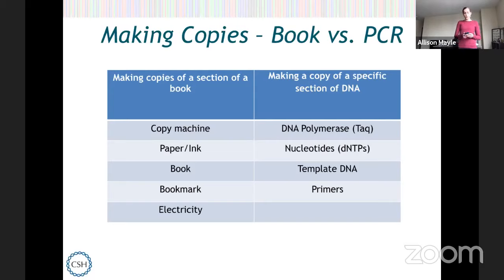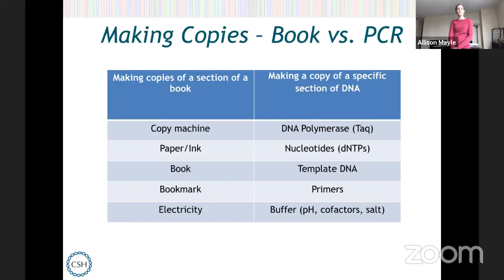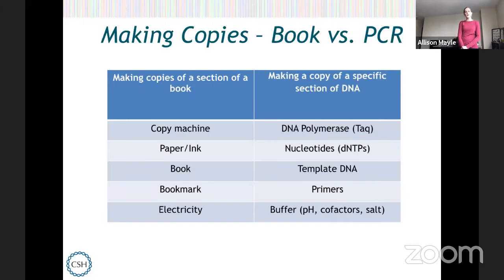For electricity or environment, we put a buffer into our PCR. This helps control the pH. If you watched our bubbling liver video, you learned about how having too acidic an environment can denature enzymes — the same thing would happen to polymerase. If the pH wasn't maintained at the right level, the polymerase could be denatured and wouldn't function properly. It also has cofactors required for the enzyme to work, and other things to make sure the salt concentration is perfect. We're mimicking what the inside of a cell would be like, where the polymerase would normally be functioning.